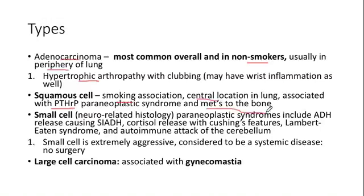If squamous cell metastasizes to bone, the patient will have increased calcium and increased alkaline phosphatase. So if you see elevated calcium with a lung mass, think squamous cell. But if they have elevated calcium AND elevated alkaline phosphatase, that suggests bone metastasis — do a skeletal survey. With PTH-related protein elevation, you get elevated calcium with low endogenous PTH and you should NOT see elevated alkaline phosphatase.